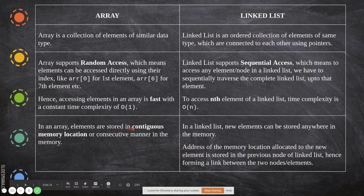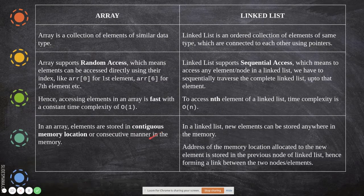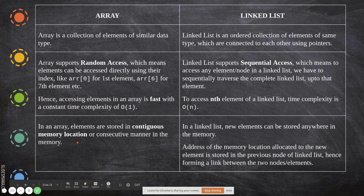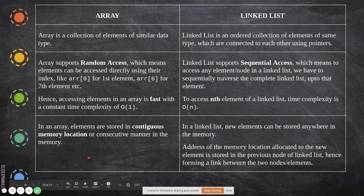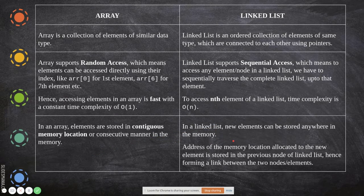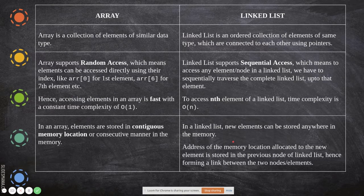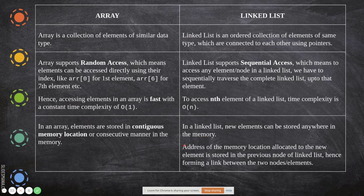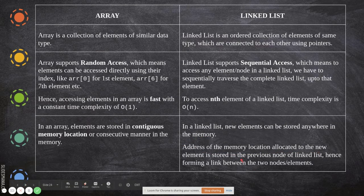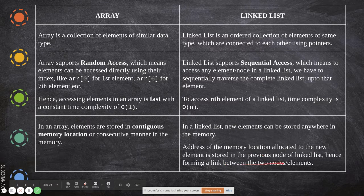In an array, elements are stored in contiguous memory location, that is next to next memory location or consecutive manner, whereas here it is not. Wherever memory is available, it will be placed. The only thing is they are connected by the pointer. So in a linked list, new elements can be stored anywhere in the memory. Address of the memory location allotted to the new element is stored in the previous node of the linked list, hence forming a link between the two nodes or elements.